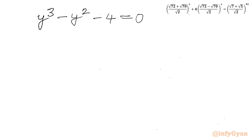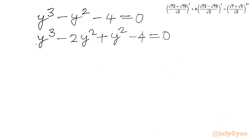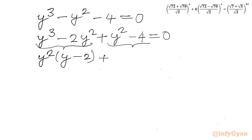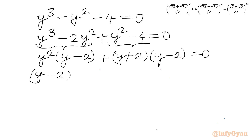This is a cubic equation; let's use factorization. I split the −y² term: y³ − 2y² + y² − 4 = 0. From the first two terms, factor out y²: y²(y − 2). From the last two terms, apply the difference of two squares: (y + 2)(y − 2) = 0. So overall: (y − 2)(y² + y + 2) = 0.